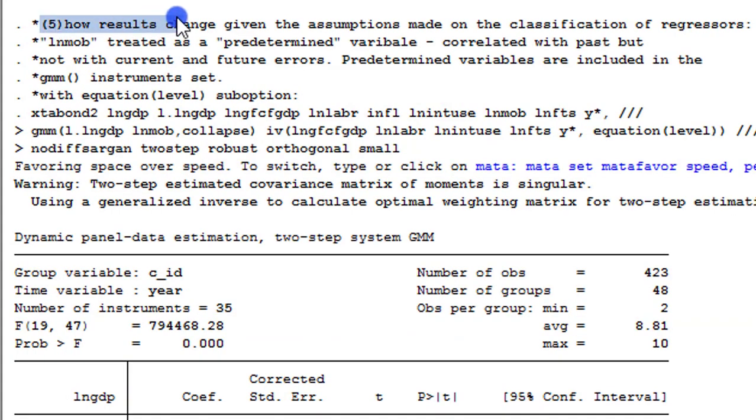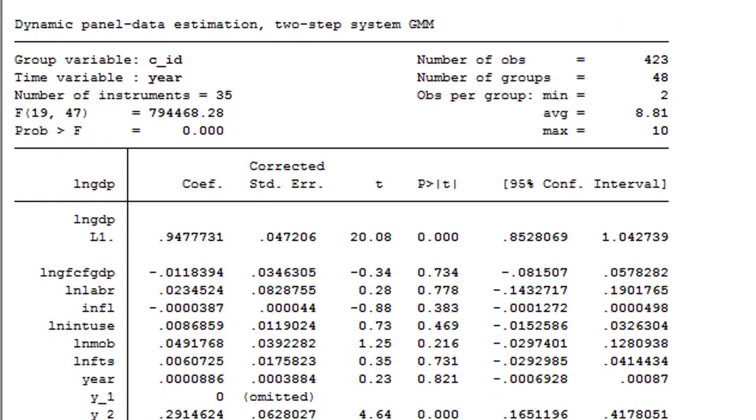Simulation 5. Now let's see how the results change when we change assumptions made on the classification of some regressors. The log of mobile has always been initially treated as an exogenous variable. Now I'm going to treat it as a predetermined variable. So because of that, I'm going to include the log of mobile in the GMM instrument set, as you can see here. And using the collapse option, what do we have? So this is the results.